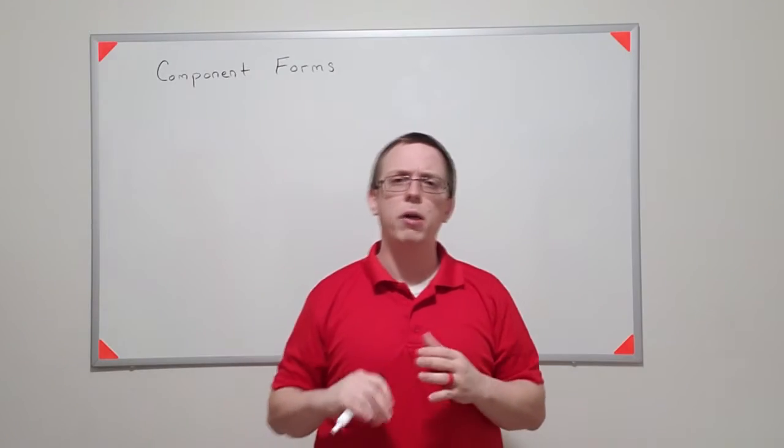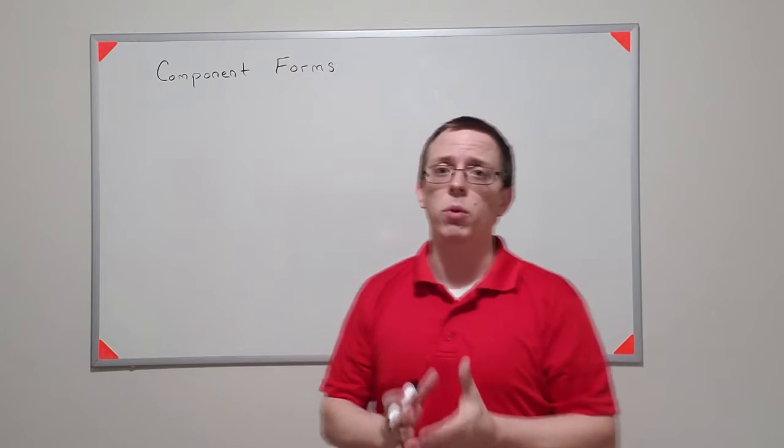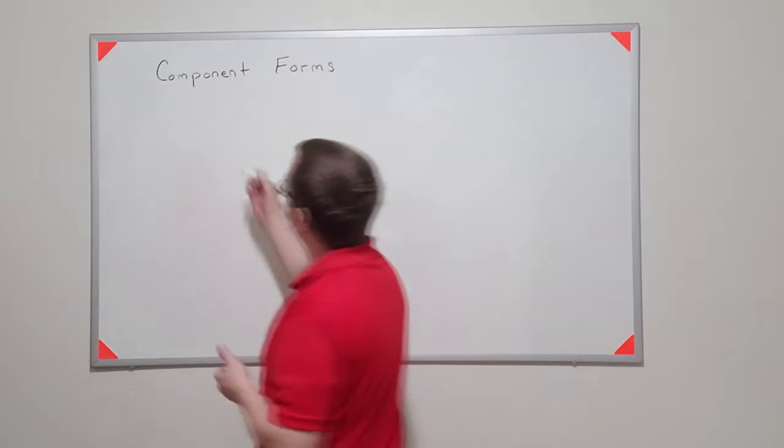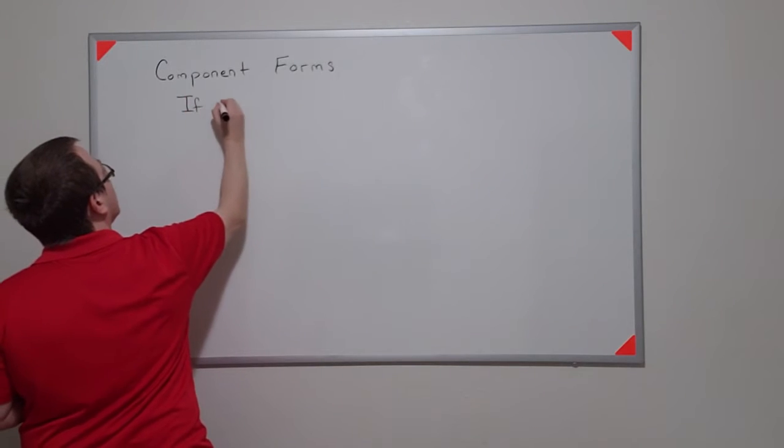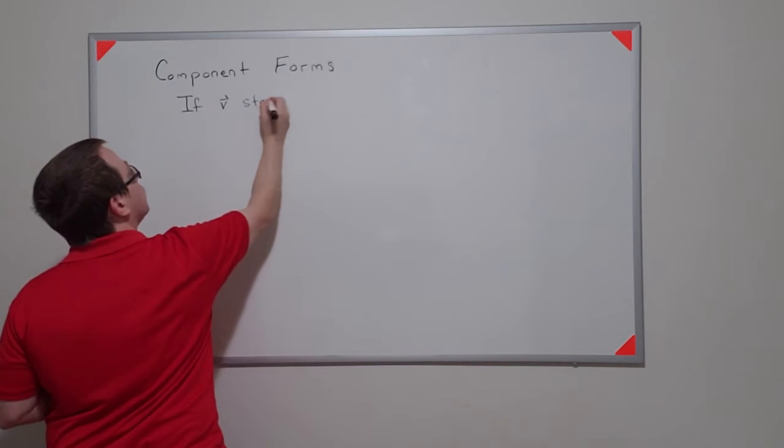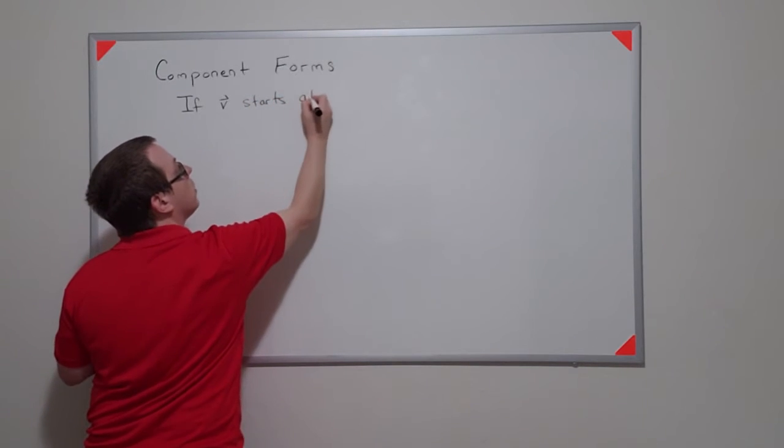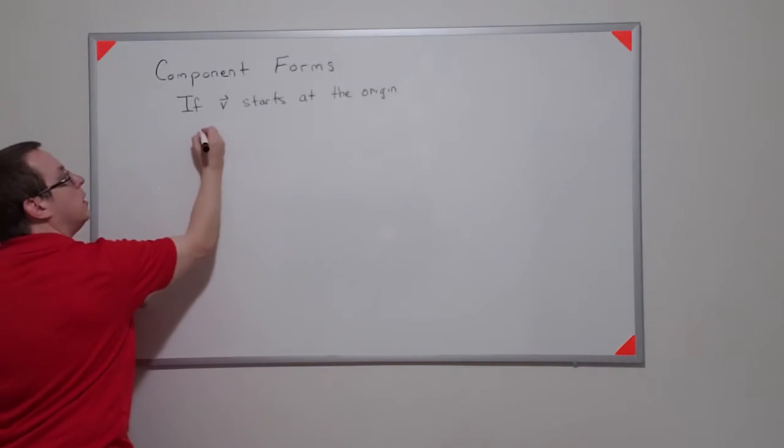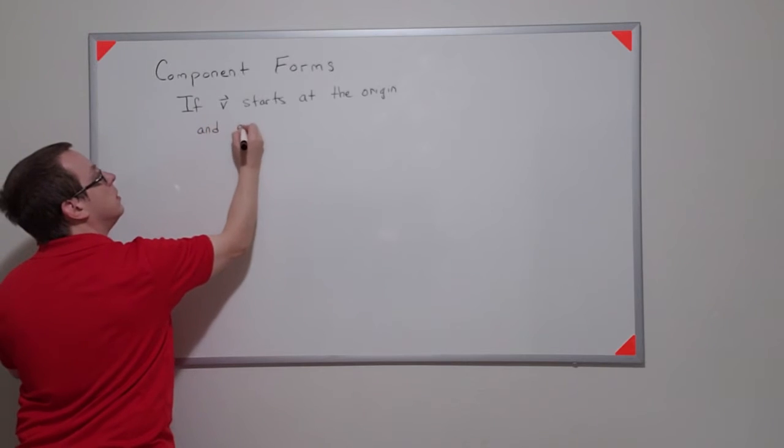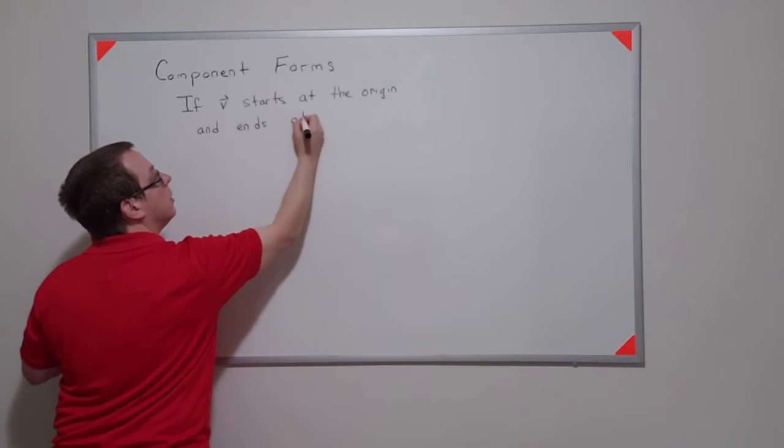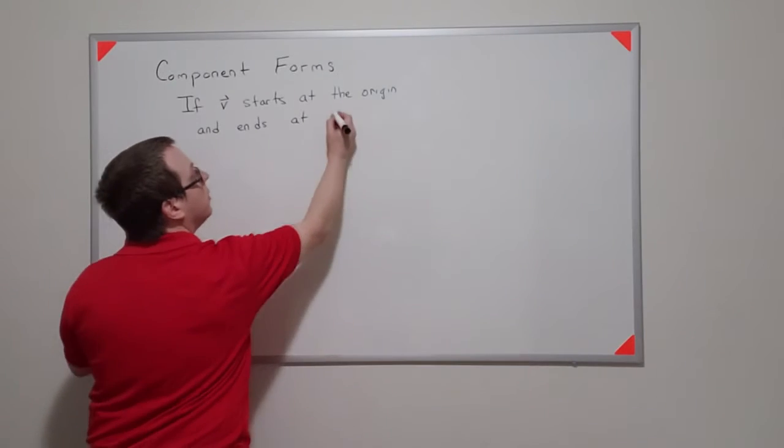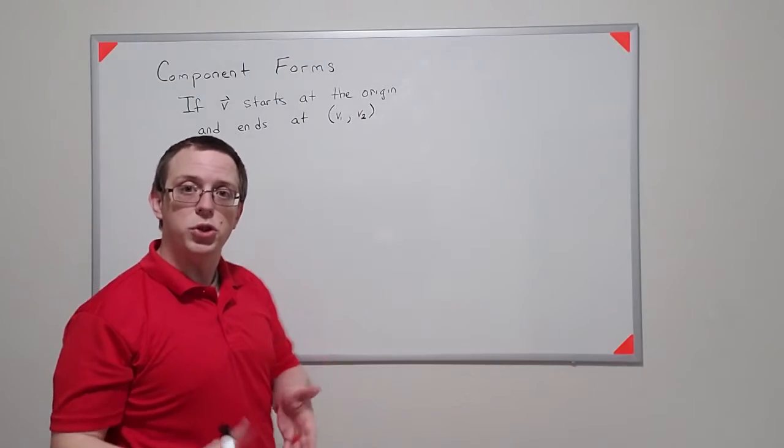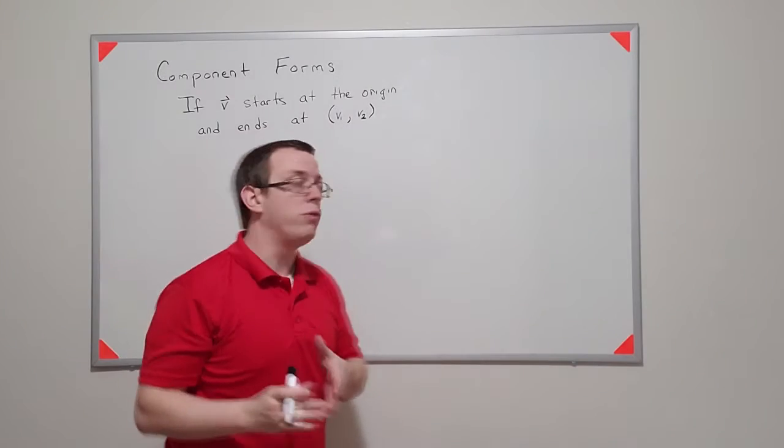When we talk about vector component forms, there's a specific notation that we want to use. So if I have, for example, a vector that starts at the origin, if a vector v starts at the origin and let's say it ends at some point (v1, v2), so some x, y, so we're dealing with two dimensions here, then we can write a component form of v.